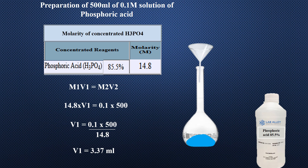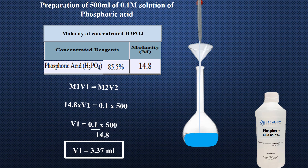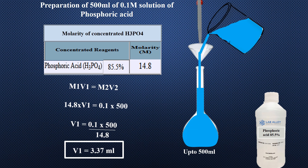To prepare 500 milliliters of 0.1 molar solution of phosphoric acid: M1 will be the same as in the previous calculations (14.8). V1 is to be found out. M2 will be 0.1, as we want to prepare a 0.1 molar solution. Put 500 in V2, as we want to prepare 500 milliliters of solution. Take 3.37 milliliters of concentrated phosphoric acid with a pipette into a 500 milliliter flask having a little water in it, and dilute the solution up to the mark. This gives 500 milliliters of 0.1 molar solution of phosphoric acid.